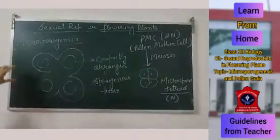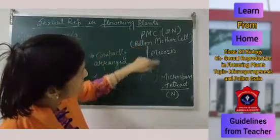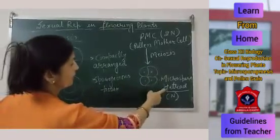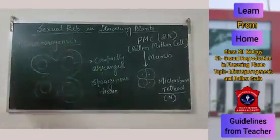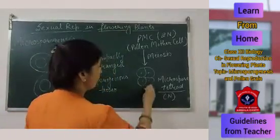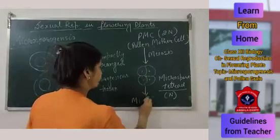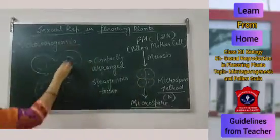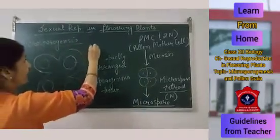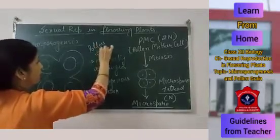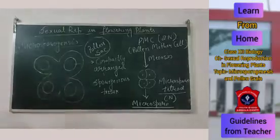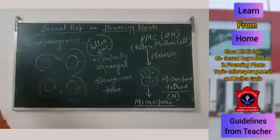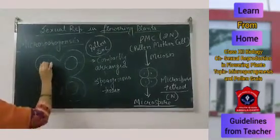When the young anther is present, the PMC will undergo meiosis and form the microspore tetrad. When the anther is mature, this microspore tetrad will separate or dissociate from each other to form individual microspores. The microsporangium is also known as the pollen sac. The wall of the pollen sac will break down — this is known as dehiscence of the anther — and all the pollens will be released out.